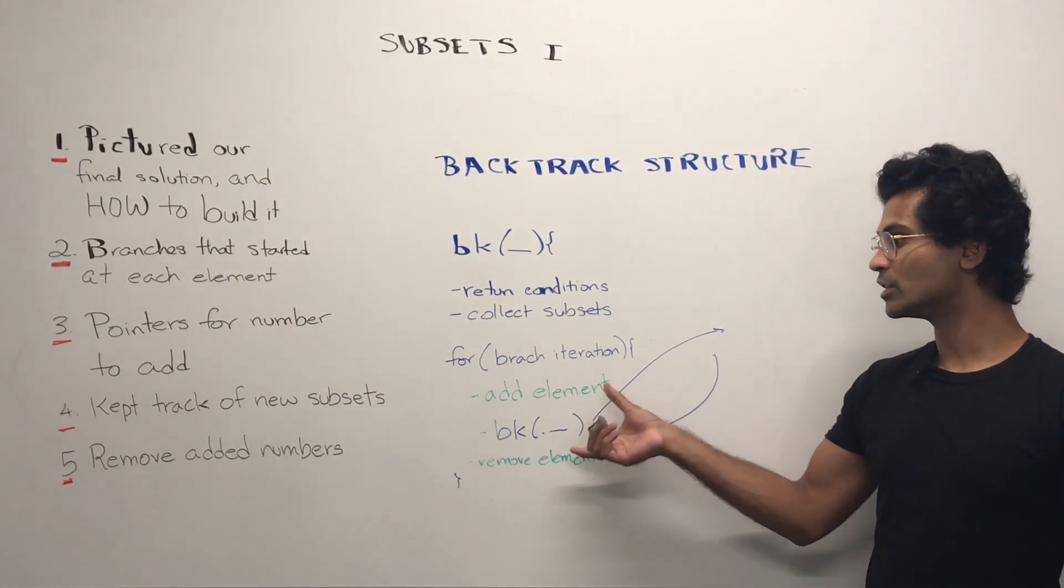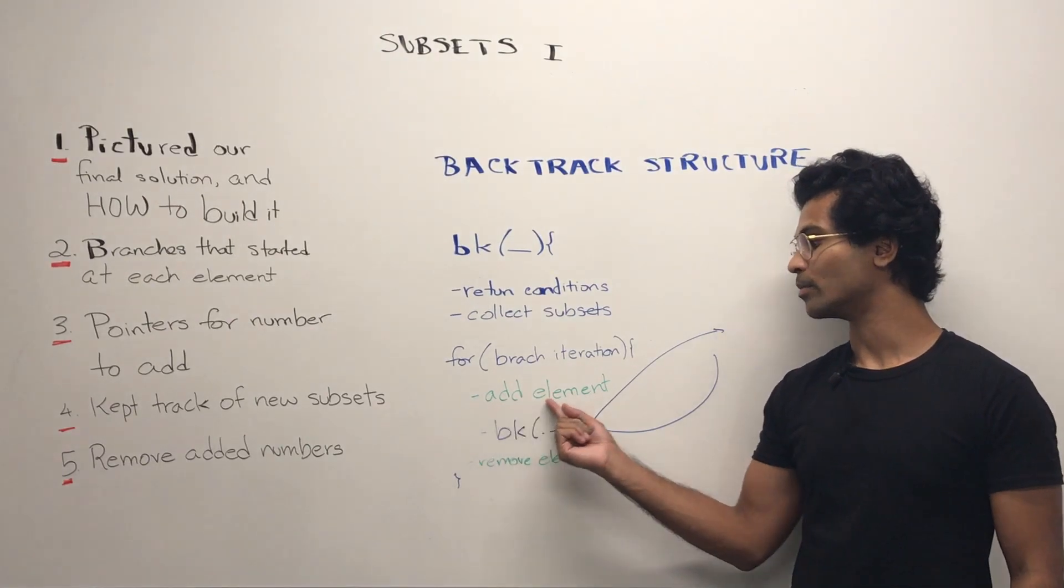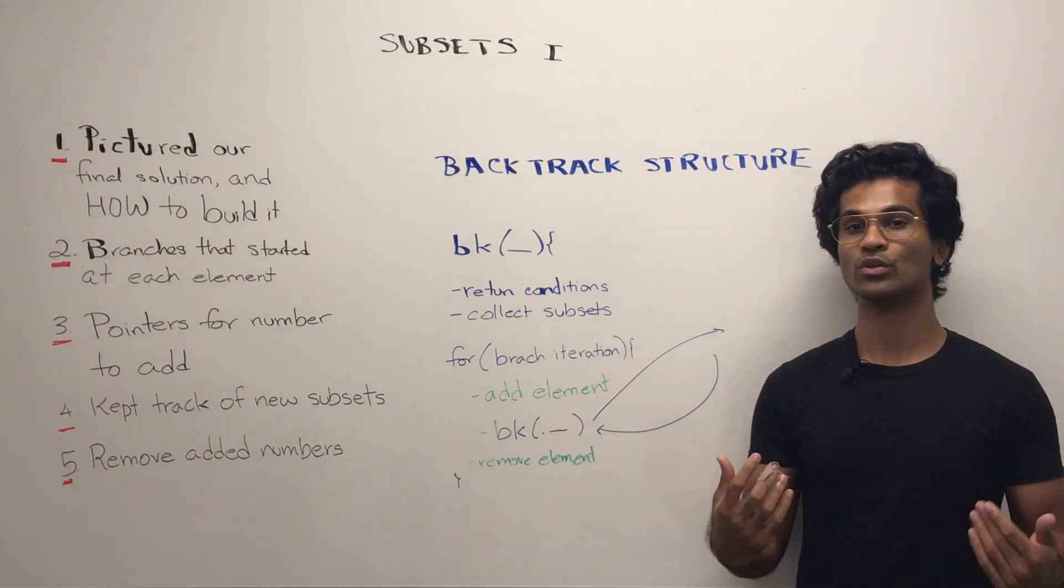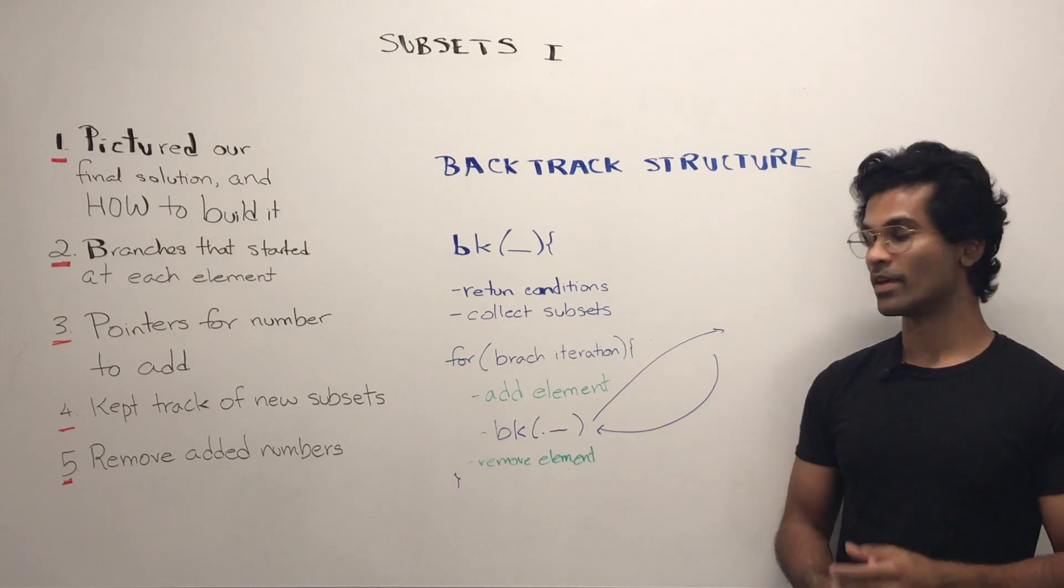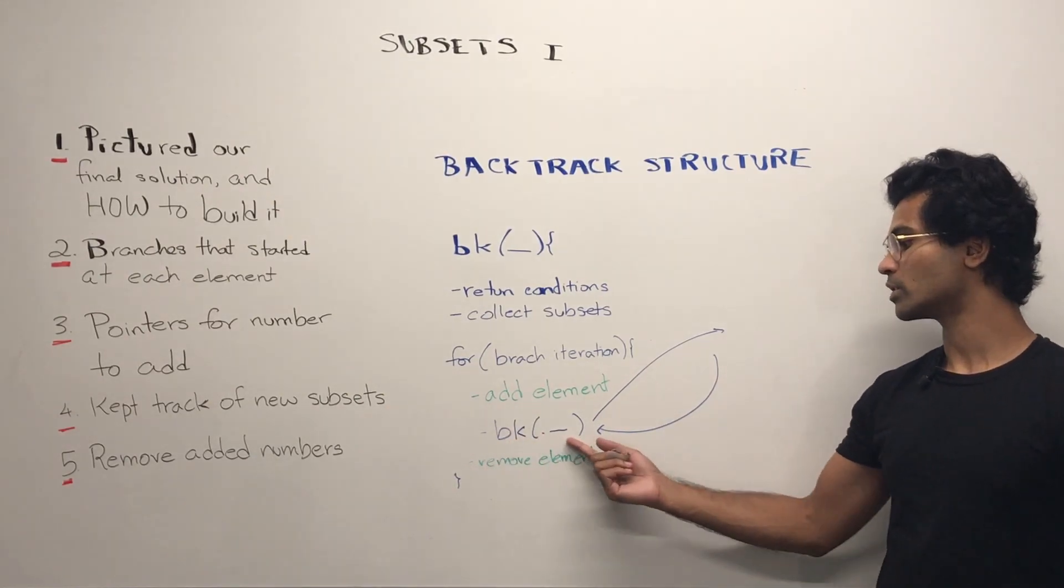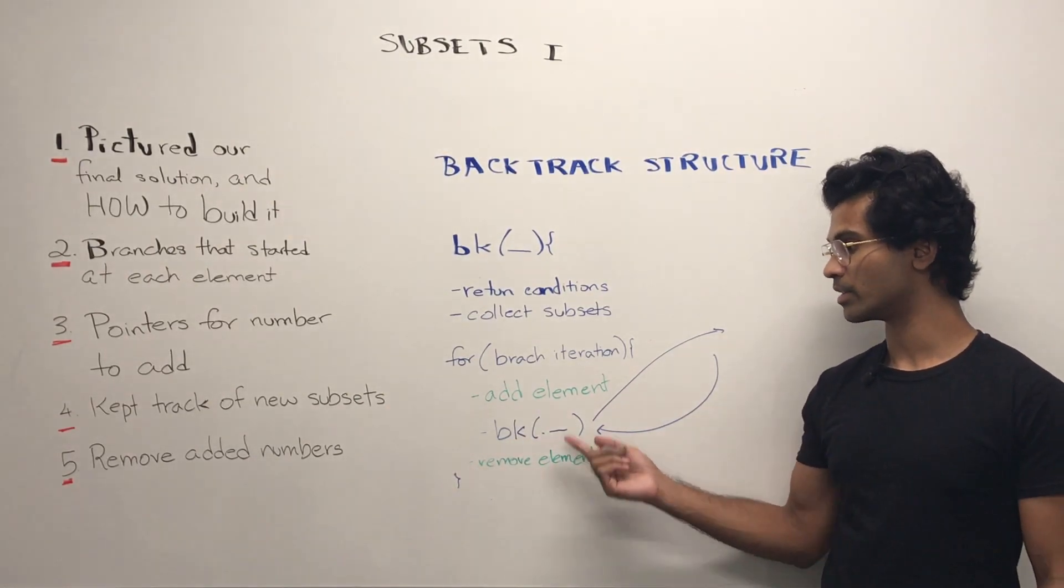Then within each iteration, we're going to add an element. This is going to be based on which new number we're adding. And then we recursively call our function and finally remove the same element that we added.